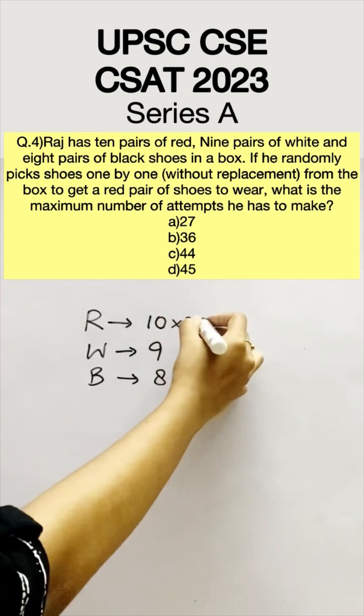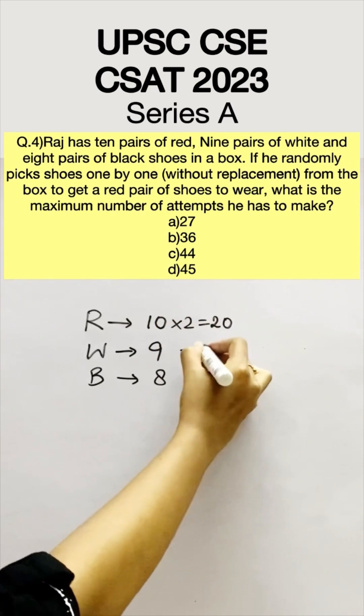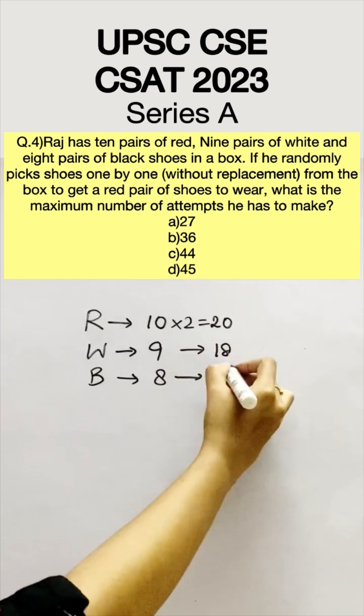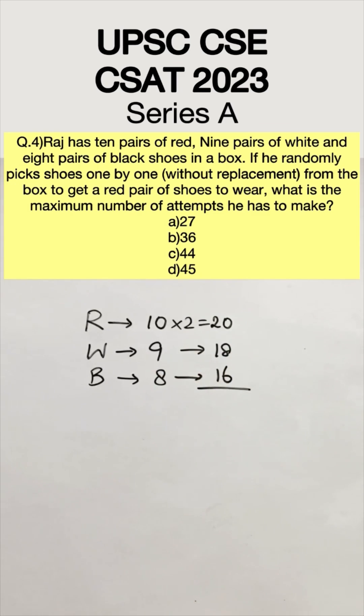Now pairs of shoes means there are 2 shoes each. So there will be a total of 20 red shoes, 18 white shoes and 16 black shoes.